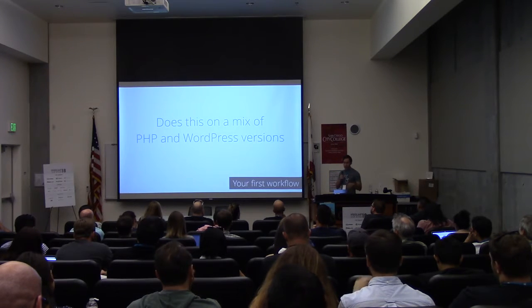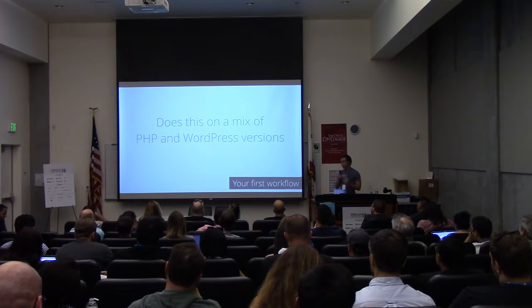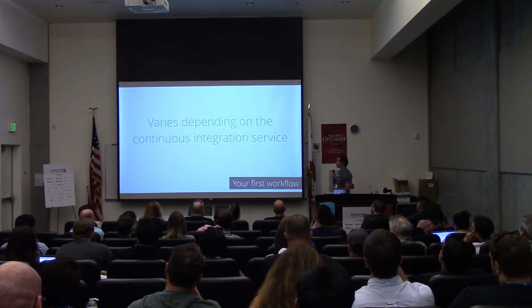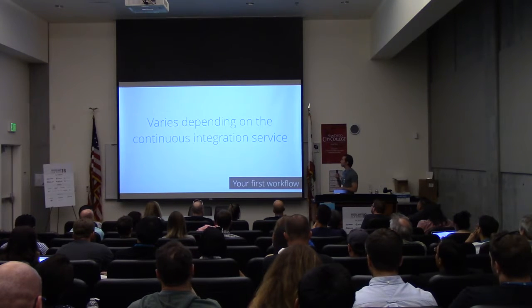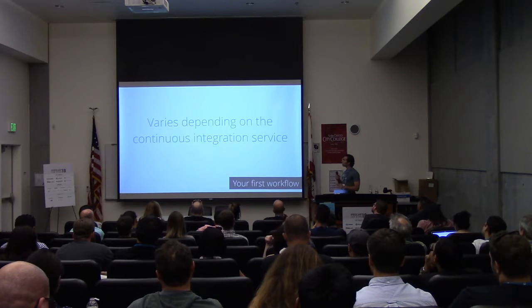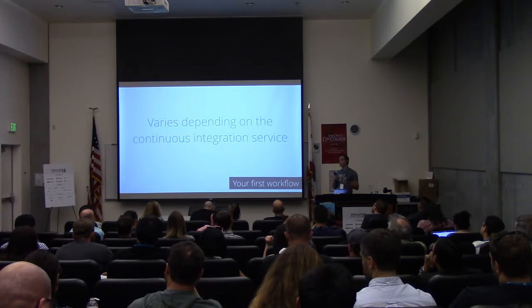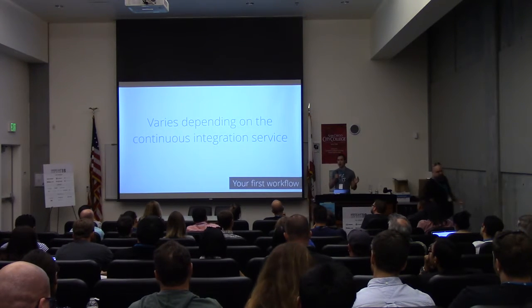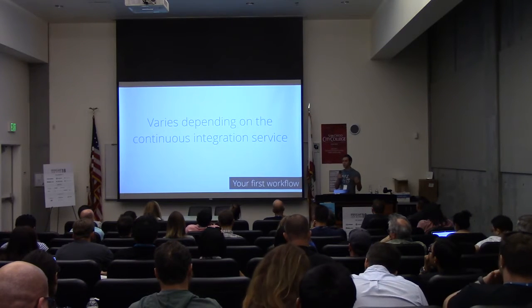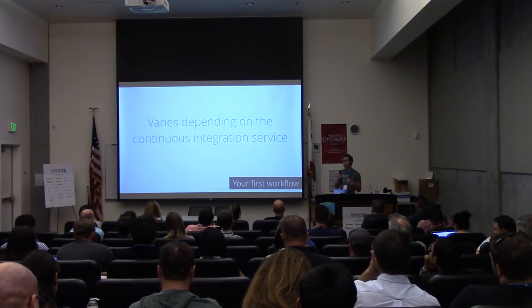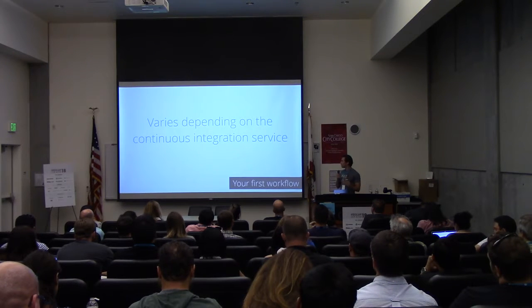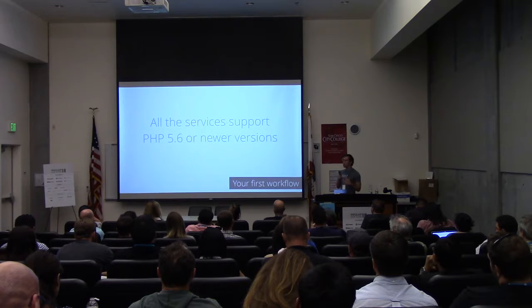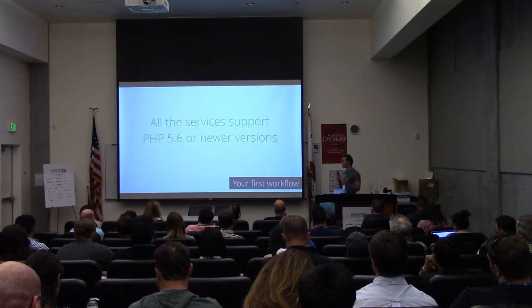It also runs tests on a mix of PHP and WordPress versions. This varies a lot depending on the service you use. Travis supports the most PHP versions — if you have users on PHP 5.3 or 5.2, Travis is the only service with those versions built in. Otherwise, all the other services support PHP 5.6 or newer, including PHP 7, 7.1, and 7.2.